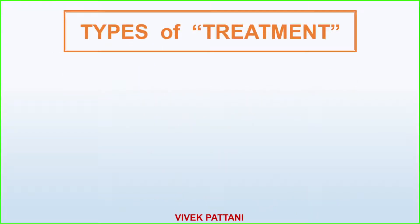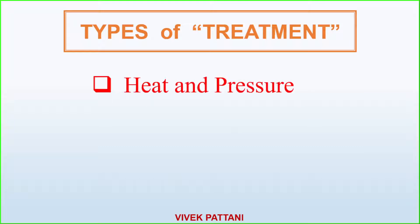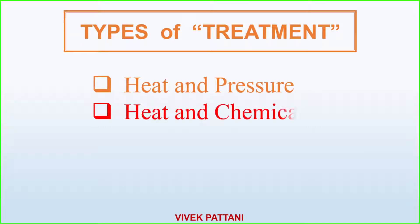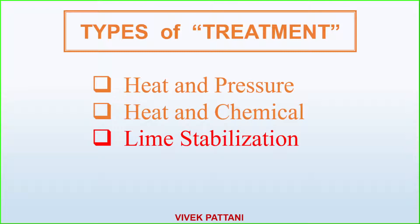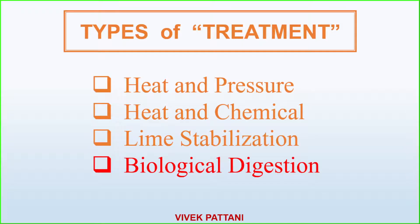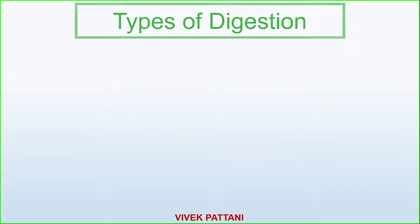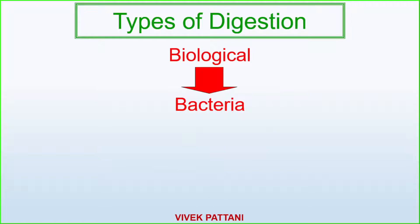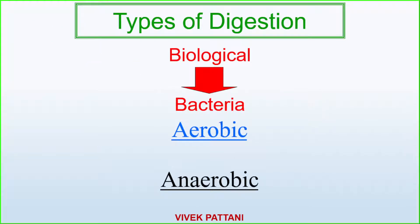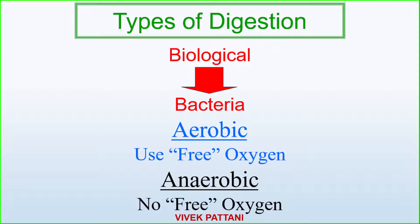Types of sludge treatment include heat and pressure, heat and chemical, lime stabilization, and biological digestion. In this video we'll mostly focus on biological digestion. In the biological digestion process, bacteria are involved — under aerobic conditions oxygen is used, and under anaerobic conditions oxygen is not used.